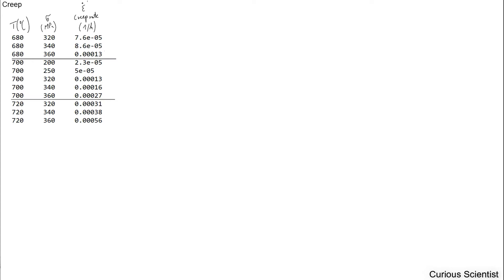Welcome everyone! In this video we are going to do some calculations for creep. So as you can see I put some numbers on the screen. There are three columns. The first is the temperature given in Celsius degrees, and then we have stress in the middle column given in megapascal, and we have the creep rate or epsilon dot given in one per hour units. And then we can have several questions based on this data — we will pick two questions for this type of data.